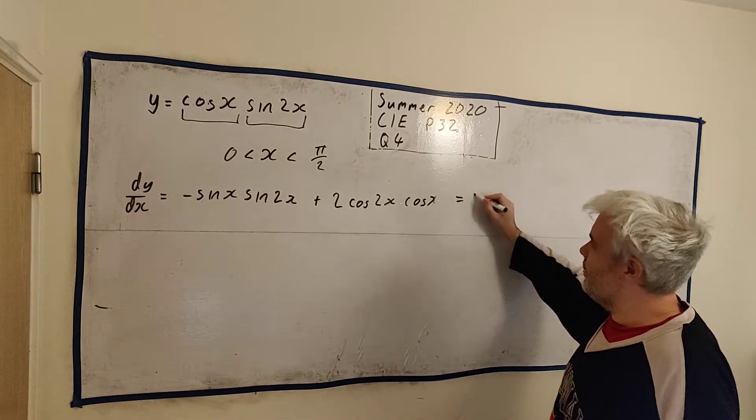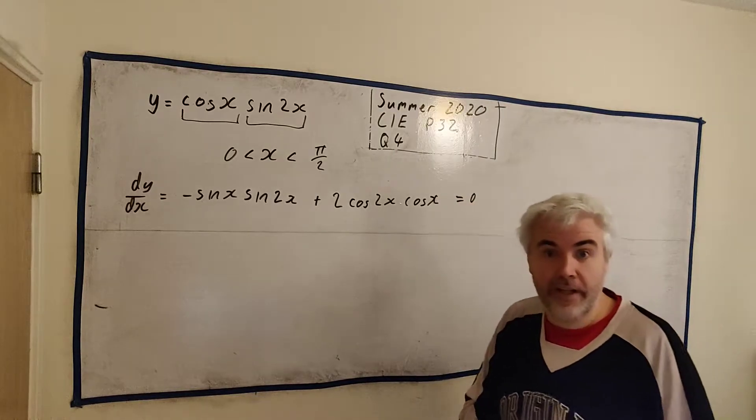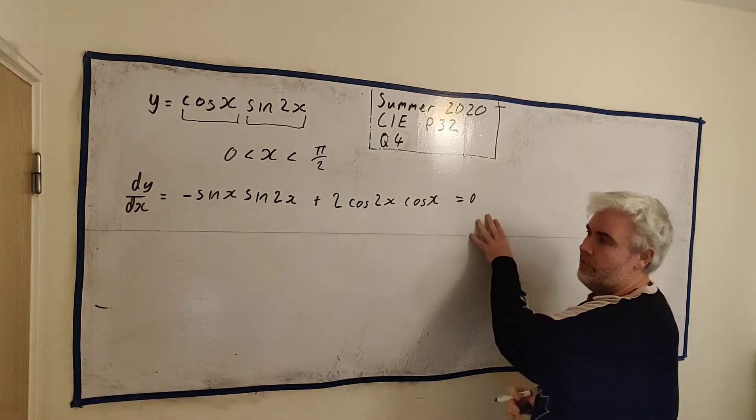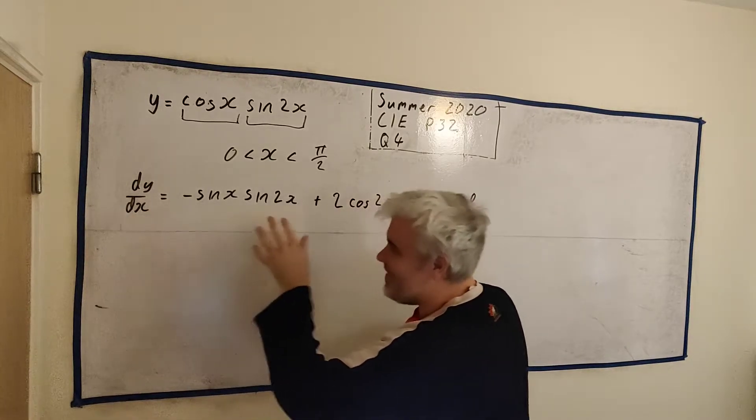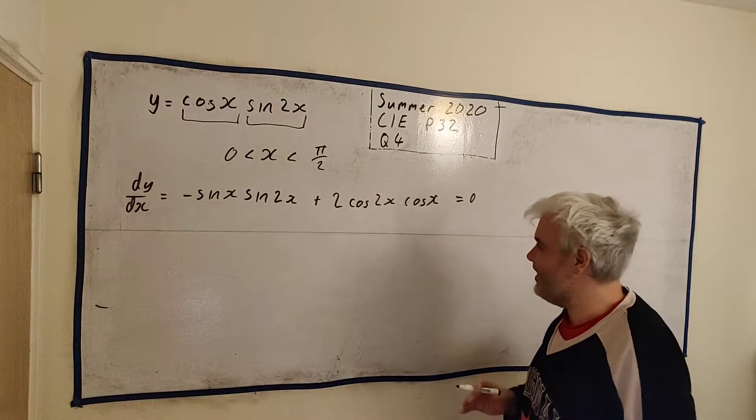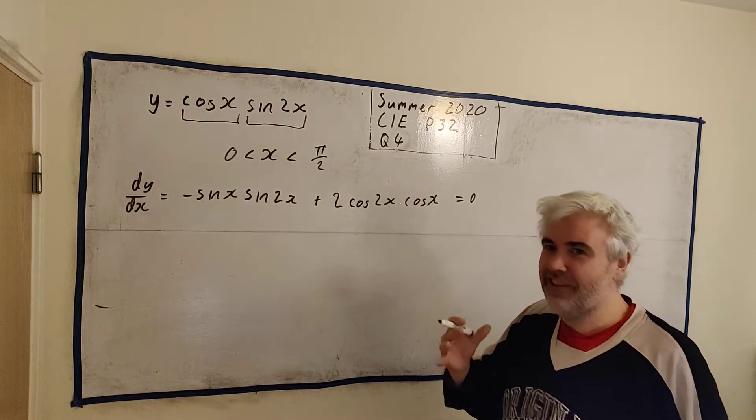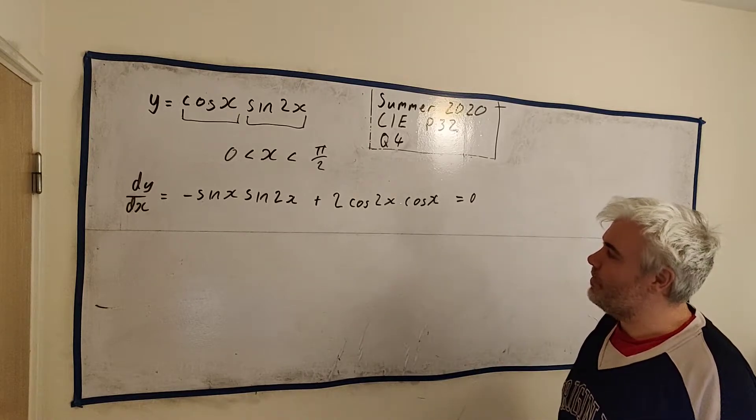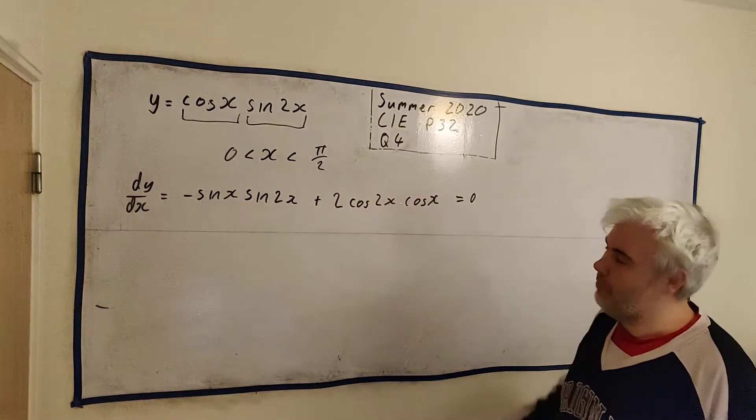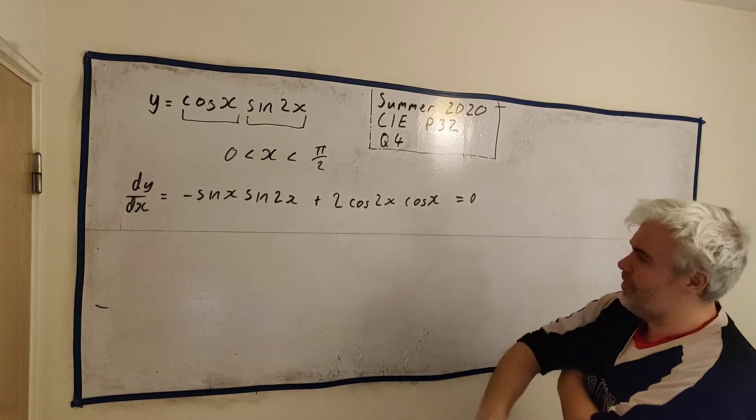And we know this is equal to 0, because we're looking for x when this equals 0. The derivative is equal to 0 at a stationary point. And so basically we're finding what x is when this equals 0. So we need to clean all this up.